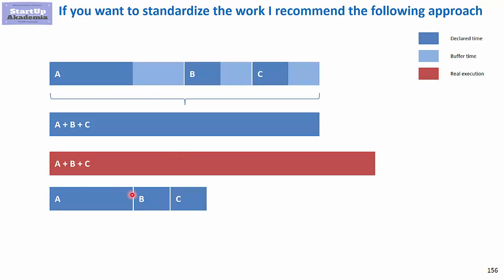So you actually end up with A, B, C being quite short, but since the buffer was hidden within the activities here, it was wasted by the people independently.